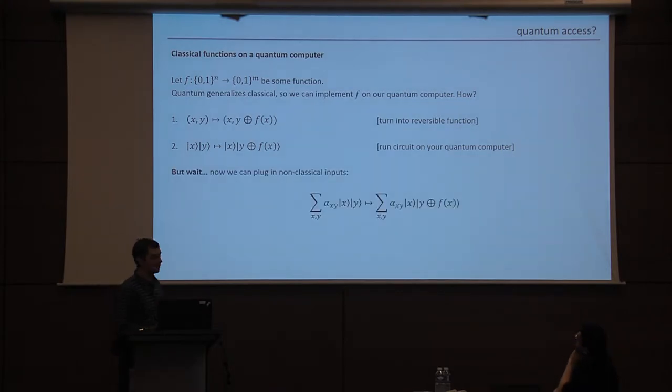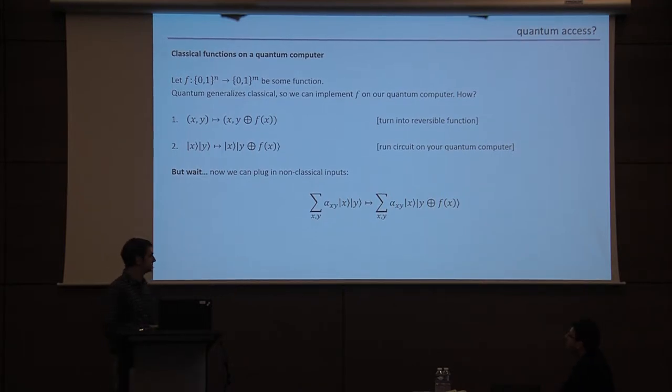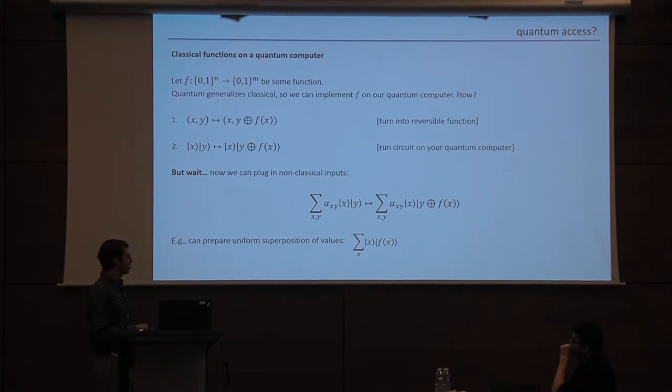Of course, now that we have it running on our quantum computer, we're not restricted to just plugging in boring classical inputs like pairs x, y. We can actually prepare more complicated quantum states, which are superpositions with perhaps very complex amplitudes over different pairs x and y, and then if we plug that kind of complicated state into an oracle, then we'll get the corresponding superposition of input-output pairs of the function.